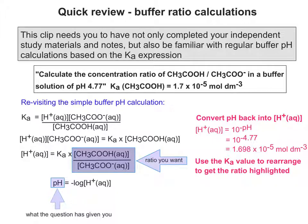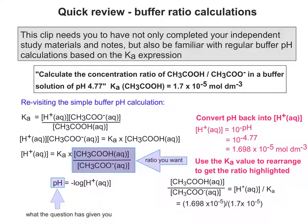So the next thing to do is to use the Ka value that's provided in the question to make the ratio the subject. So this gives us the concentration of weak acid over the concentration of conjugate base equals the concentration of H plus over Ka.